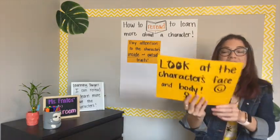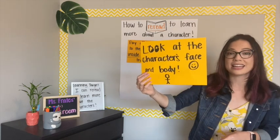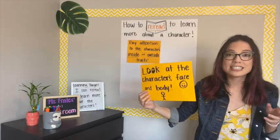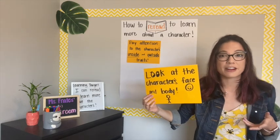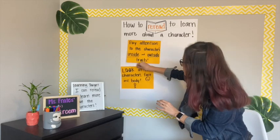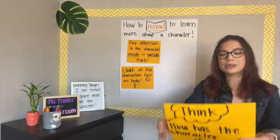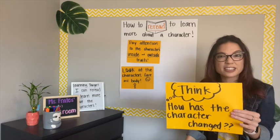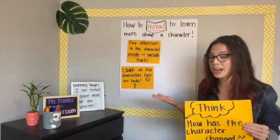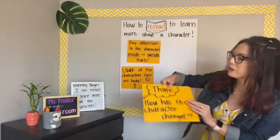Something else that we need to make sure we do is look at the faces and bodies of our characters when we reread — that means read the book again. Just like you might look at your friend's face or your friend's body to figure out how they're feeling, you can do the same for your characters. Also, think about whether this character has changed as you read the story. Did they start out really shy but then turn brave?